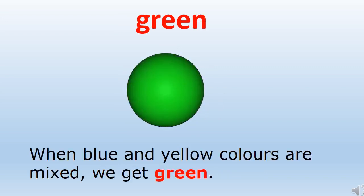The word is green. Now children, as you all know, green is also one of the color names. Now let's make the sentence with green: when blue and yellow colors are mixed we get green. Green is also a secondary color, and when we mix blue and yellow we get green color.